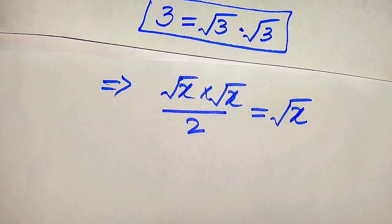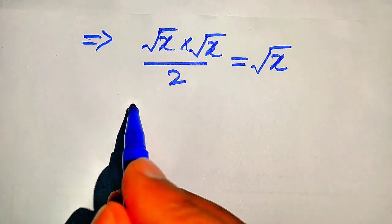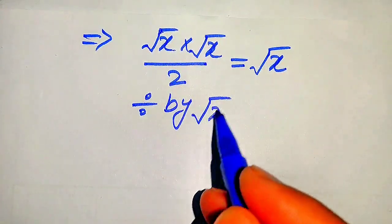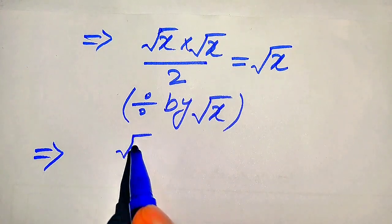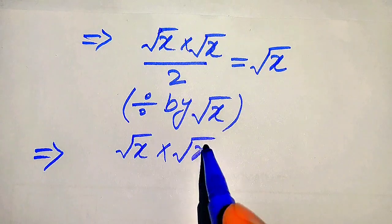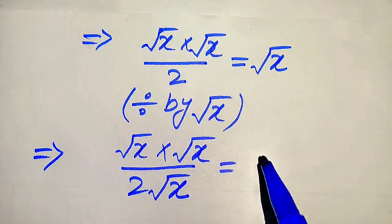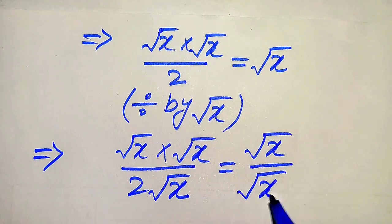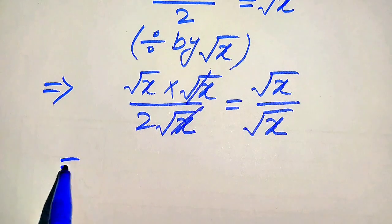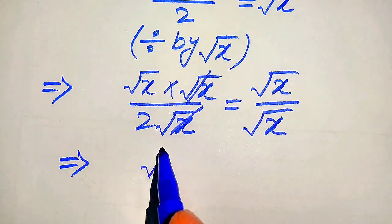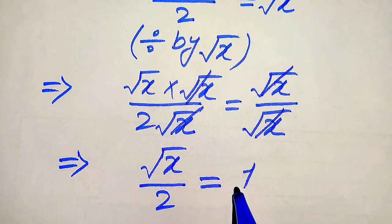Both sides now involve √x, so we divide both sides by √x. On the left hand side, one factor of √x cancels with the denominator's √x, leaving √x over 2. On the right hand side, √x divided by √x cancels to give 1. So after cancellation we have √x over 2 equals 1.